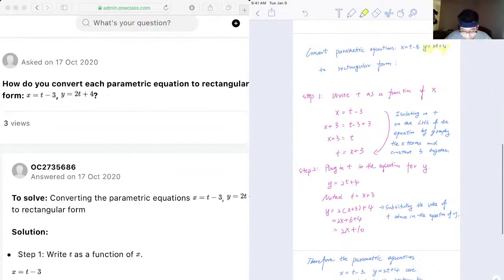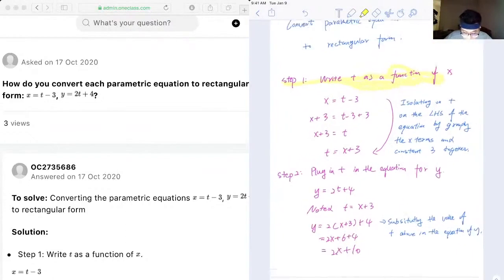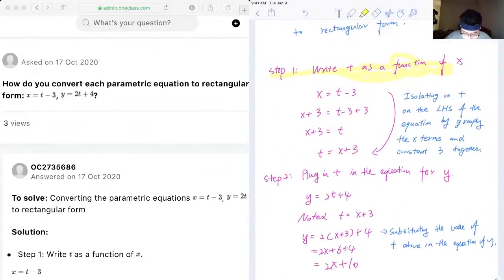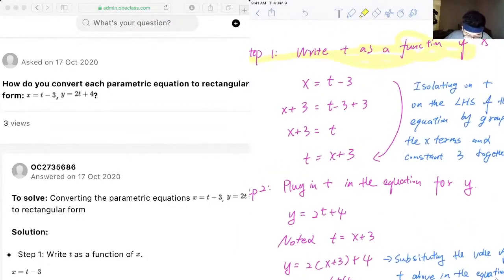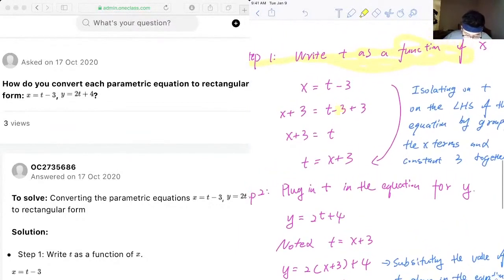So just remember the two steps. The first one is we need to write t as a function of x. You can either just add the opposite of the specific number, or you can just consider that you're moving the negative 3 to our left hand side. When we move to the other side, the sign is going to be opposite, so negative 3 becomes positive 3.